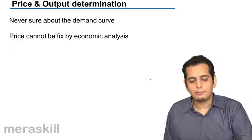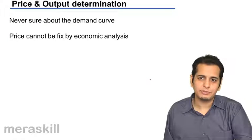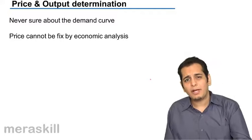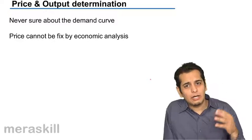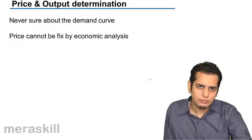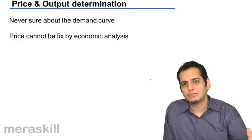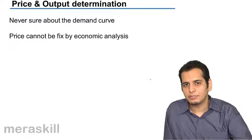Now let's take a look at the price and output determination. We've done price and output determination in other markets like perfect competition, monopoly, and monopolistic competition.